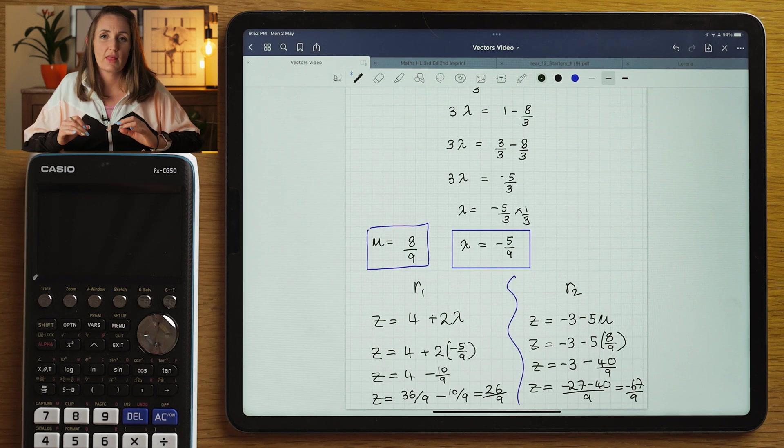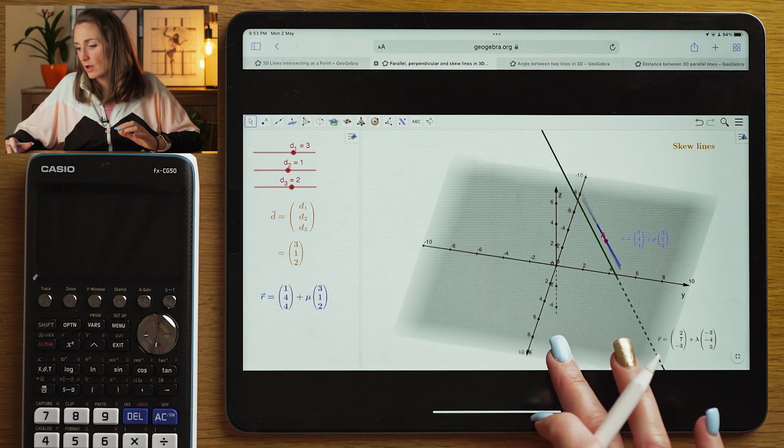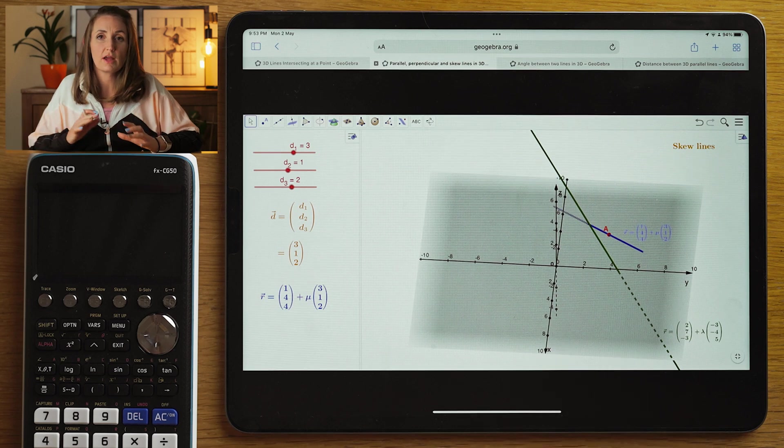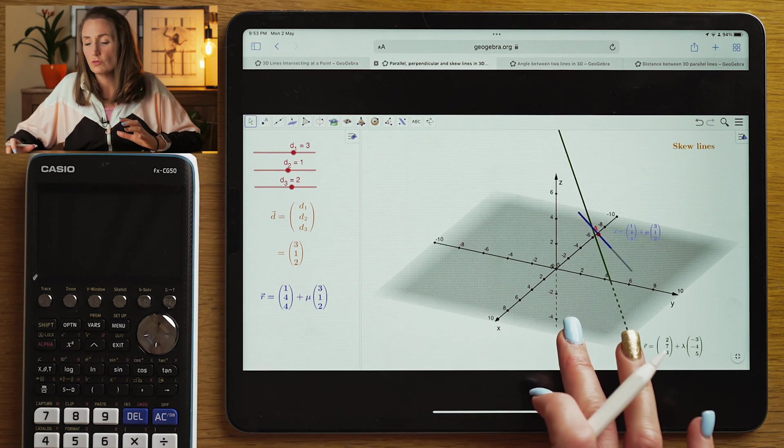And that is sufficient to prove that the lines are skew, which we can interpret as the lines are not parallel because their direction vectors weren't multiples of each other. But at the same time, they don't intersect.